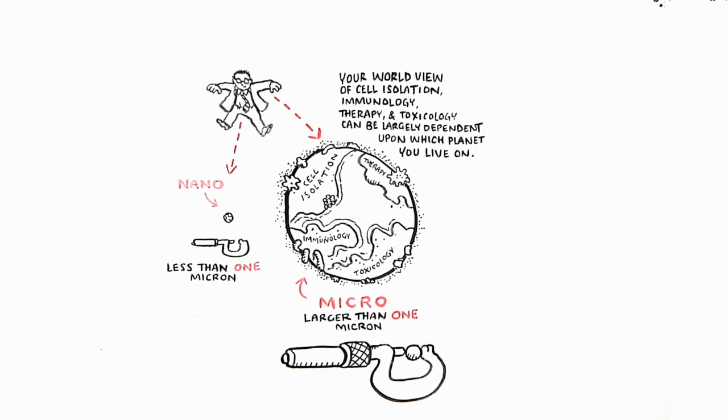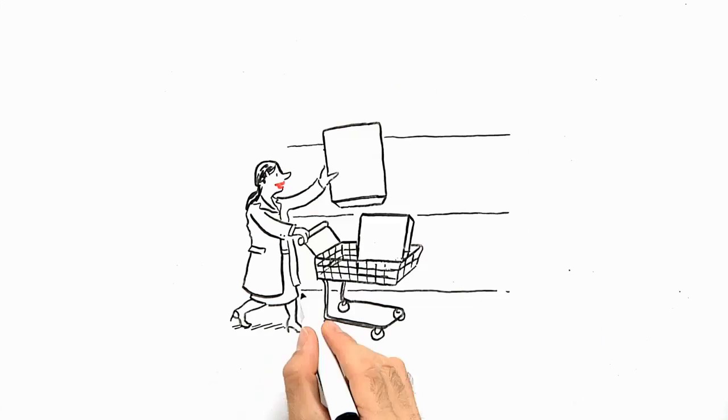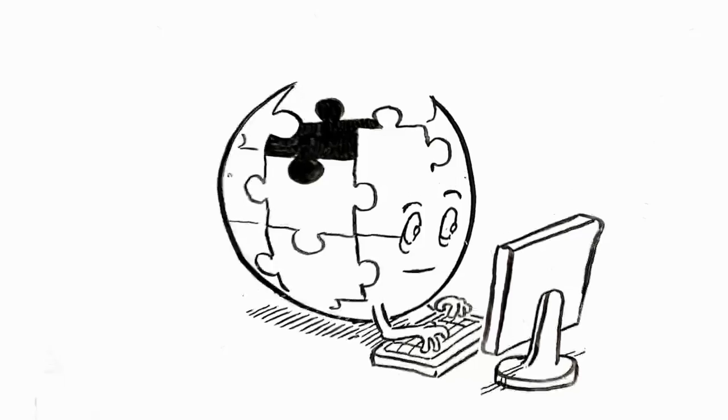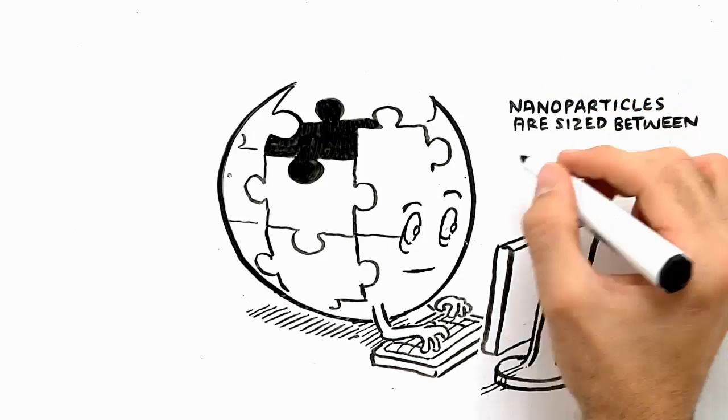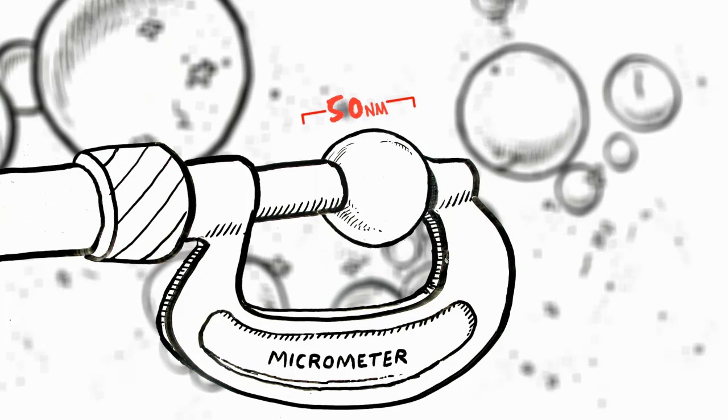While this is an oversimplification, there are many different definitions of nanoparticles in play, depending on technology, manufacturing types, and brands. But to simplify, let's look at Wikipedia's definition. Nanoparticles are sized between 1 and 100 nanometers. So here's the thing, the most commonly used product for cell isolation, referred to as microbeads, are actually only 50 nanometers.